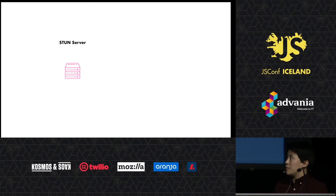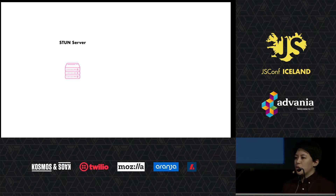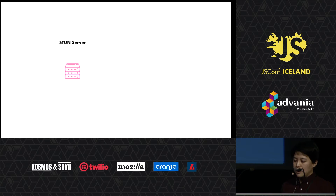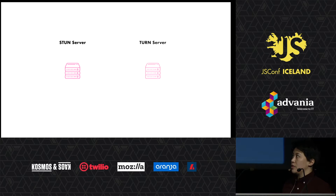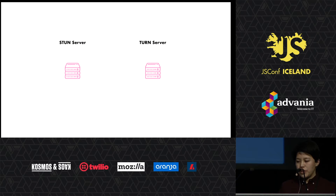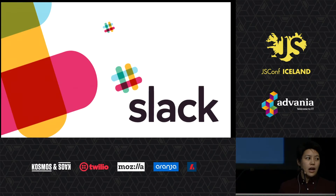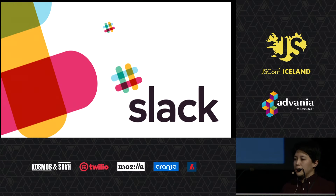Sometimes STUN servers aren't enough to give you a valid ICE candidate. This happens when your router employs a restriction called symmetric NAT. Also, when you're relaying large amounts of data you can't rely on STUN alone — this is where TURN servers come in. If anyone's ever used video conferencing in Slack, Slack uses WebRTC and relies almost entirely on TURN servers.